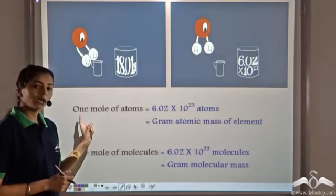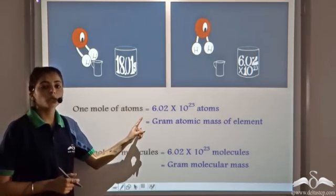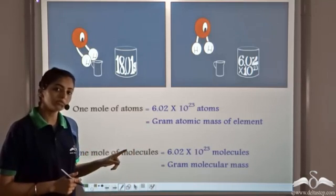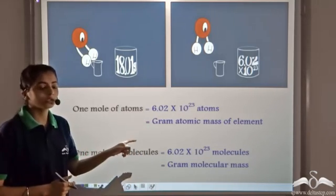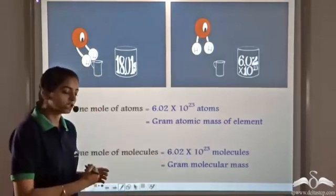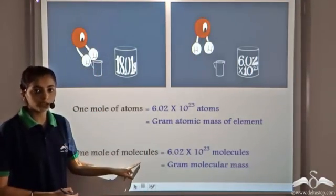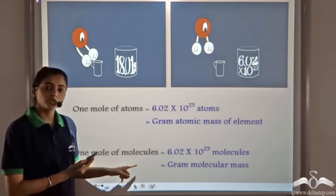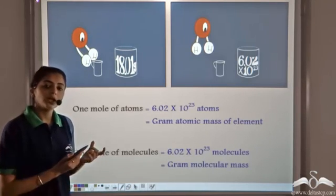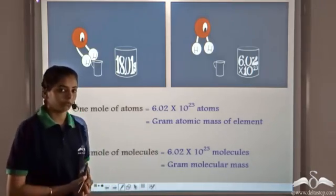Let us recall: 1 mole of atoms contains 6.02 x 10²³ atoms and its mass is equal to the gram atomic mass of the element. Similarly for molecules, 1 mole of molecules contains 6.02 x 10²³ molecules and its mass is equal to the gram molecular mass of the compound.